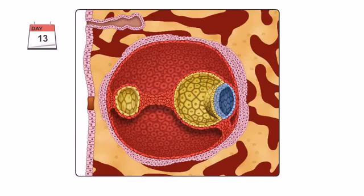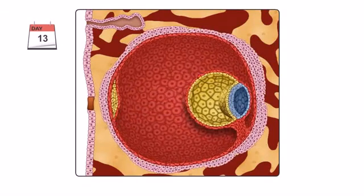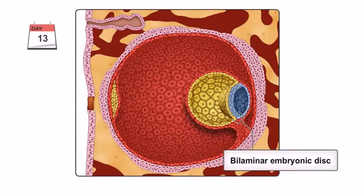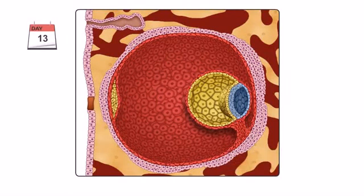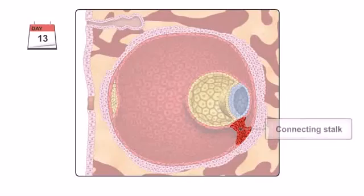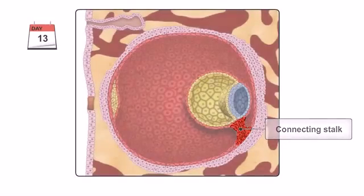By the end of the second week of development, the chorionic cavity enlarges, and the bilaminar embryonic disc is joined to the trophoblast by a band of extraembryonic mesoderm called the connecting stalk, the future umbilical cord.